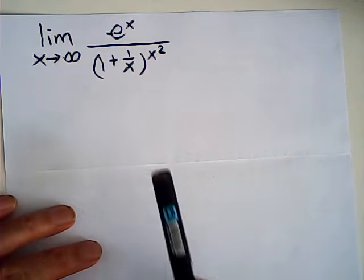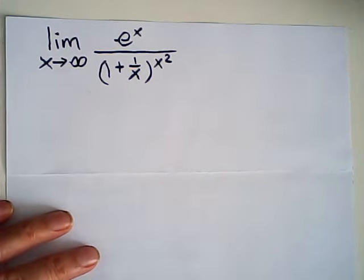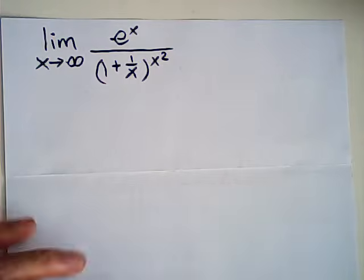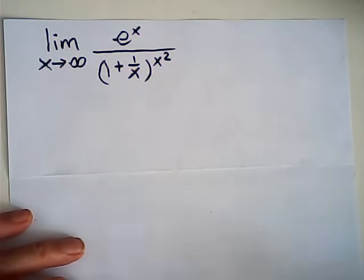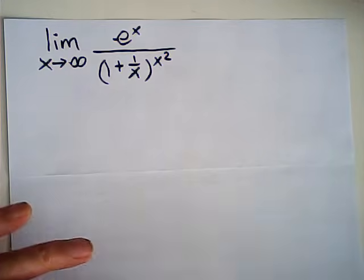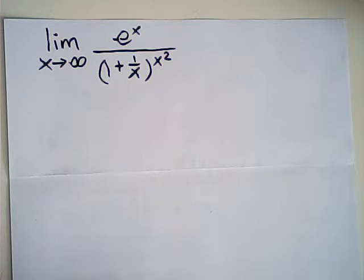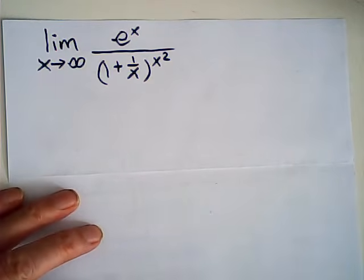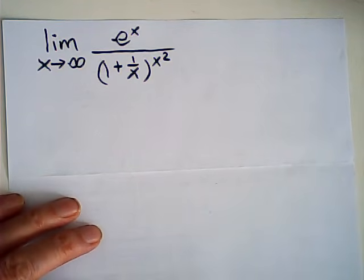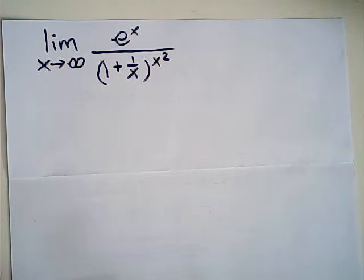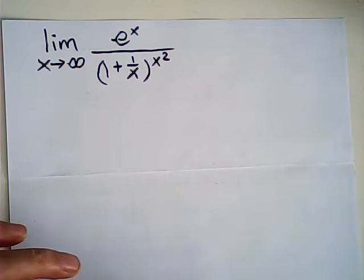Now let me do this limit by two methods. This time there is something different because these two methods lead to different answers. Obviously one of them is not correct, and then we try to find what's wrong and why, so we can have a great deal to learn from. So this is a very good example.